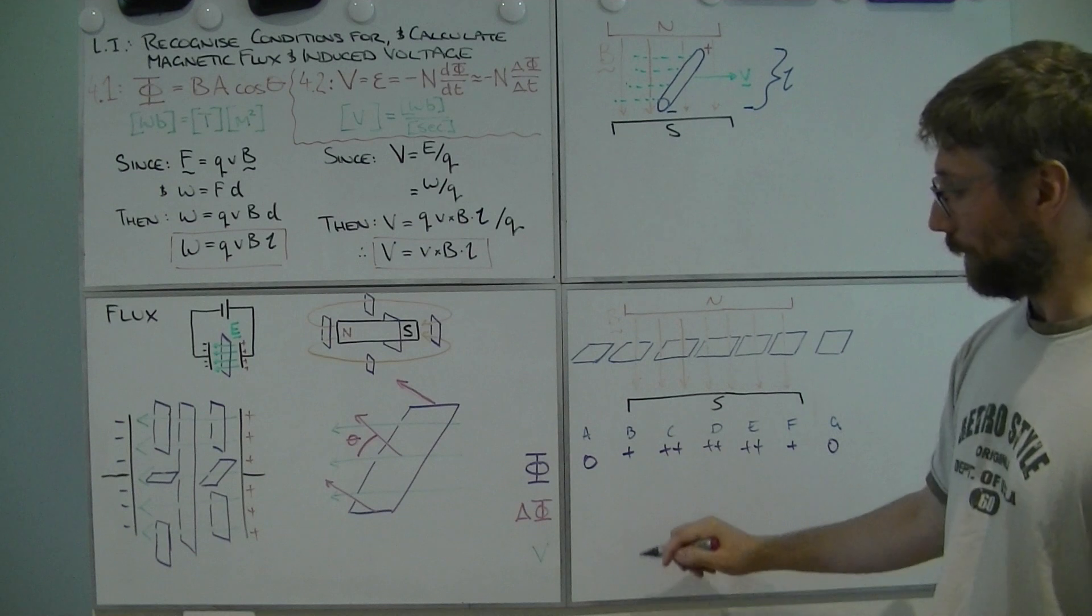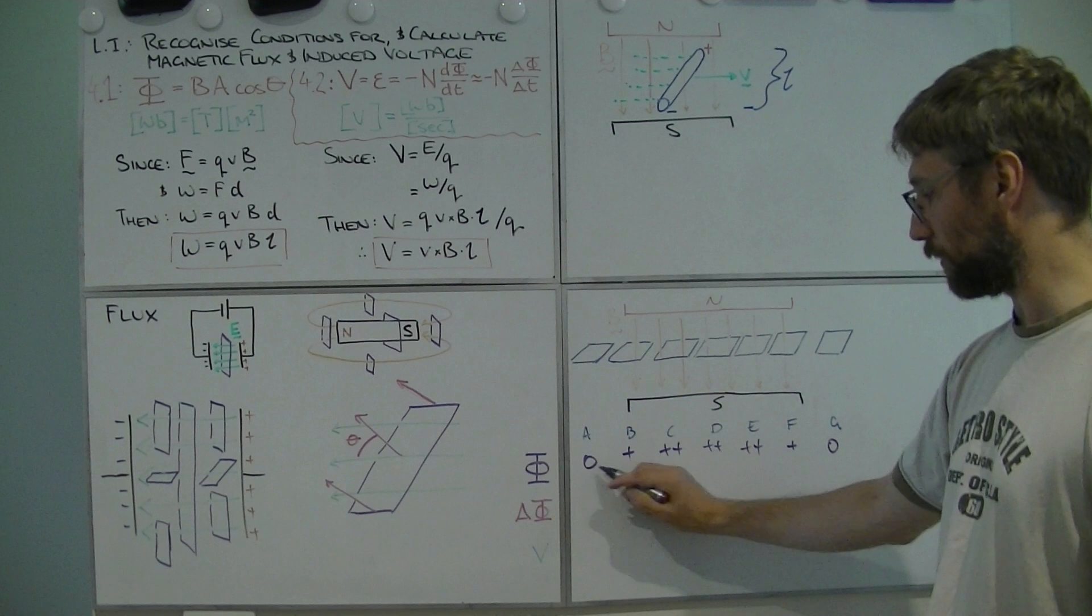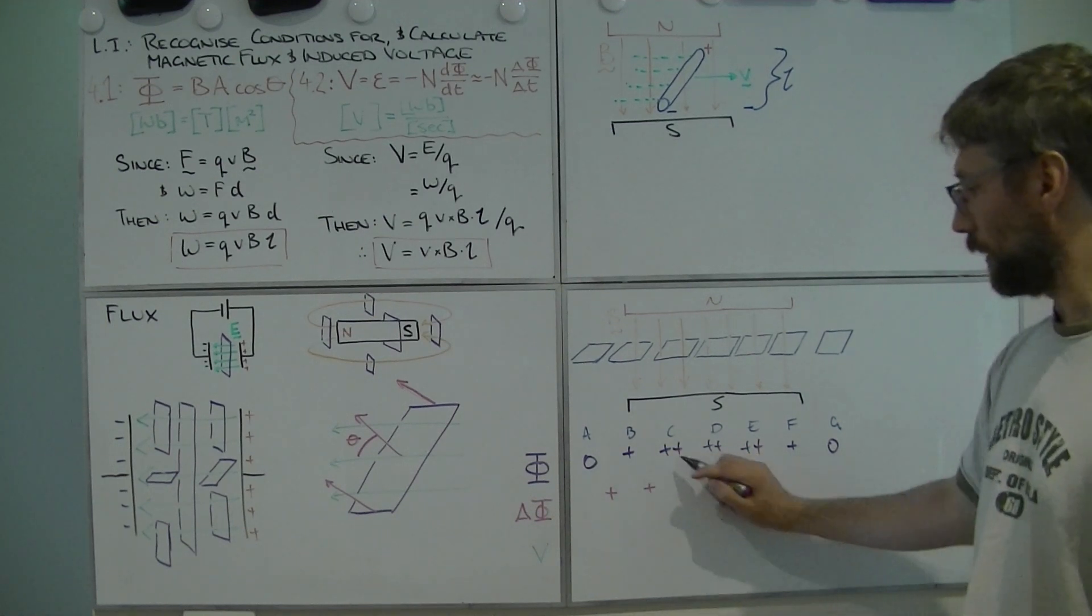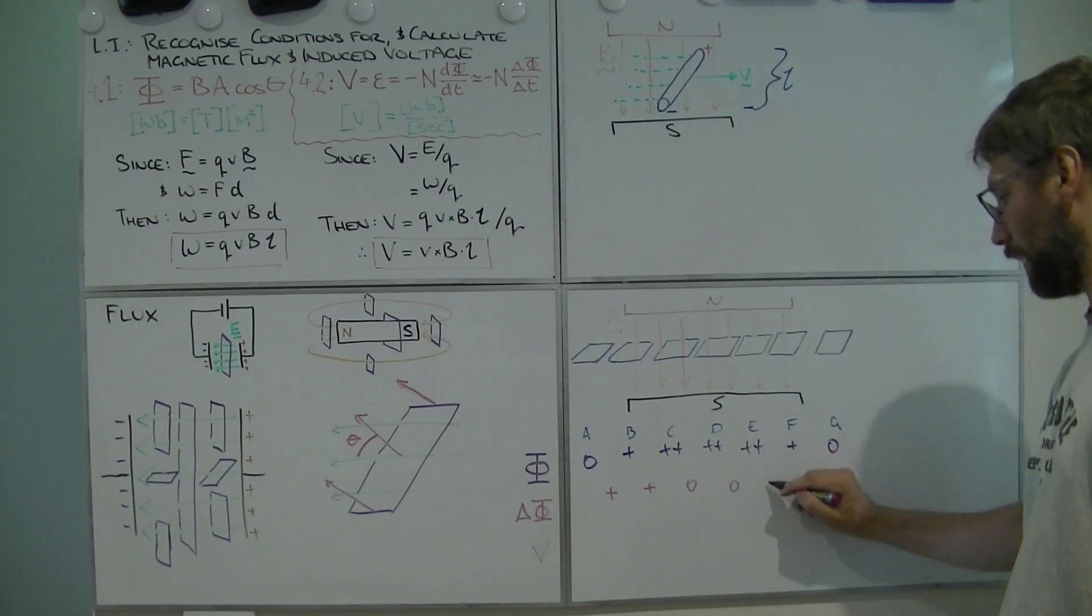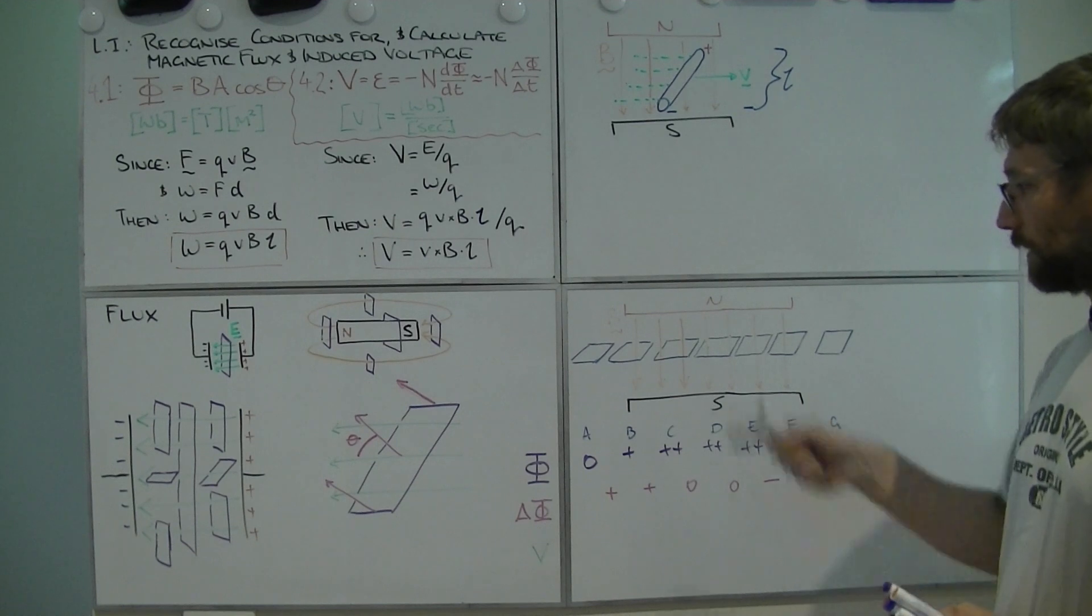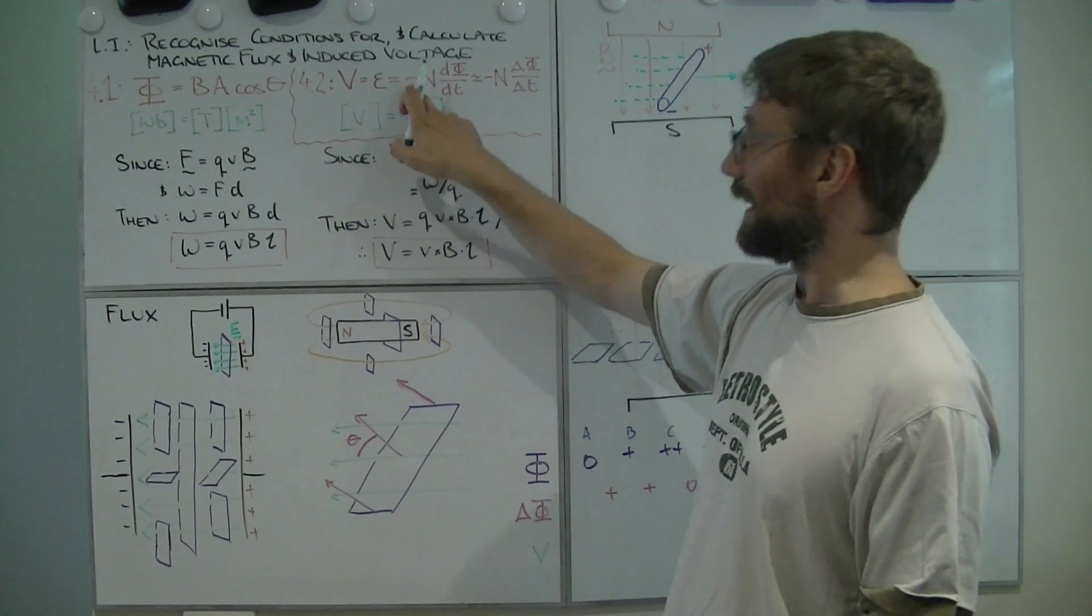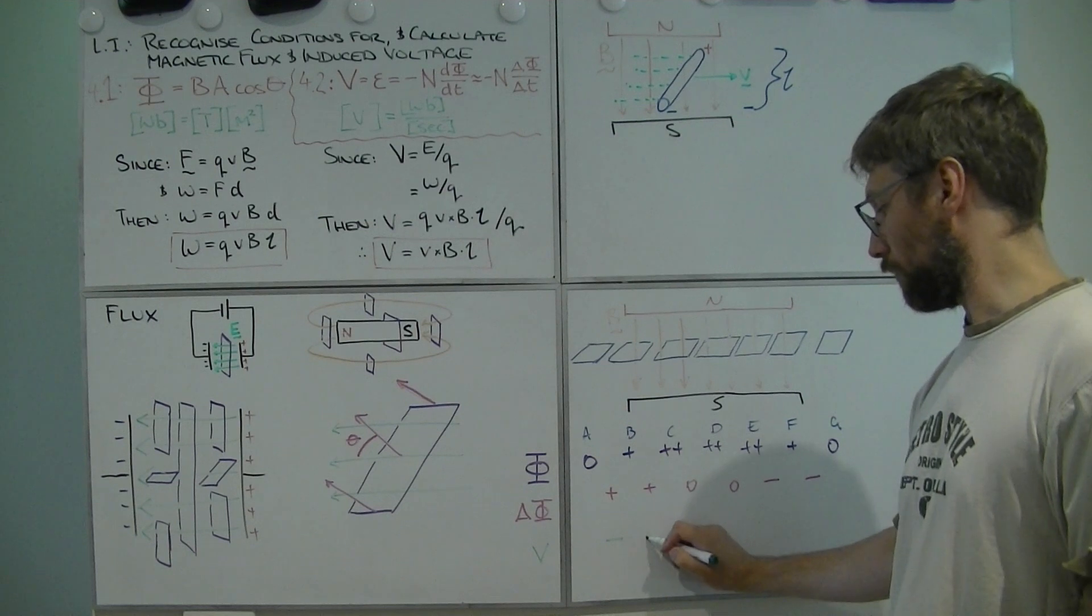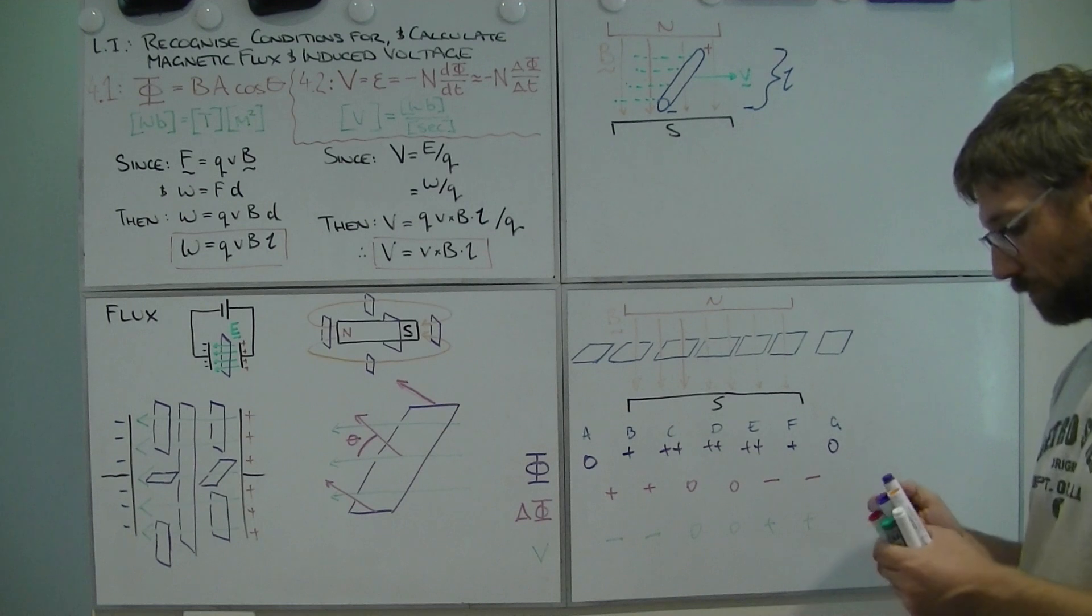Great. Alright. Change in phi. Okay. Well, that means I'm going to have to look at two neighbouring times. So, from zero to plus, that's gone up. From plus to double plus, that's gone up. From double plus to double plus, nothing happened. Same again. Here to here, I've gone minus. Here to here, I've gone minus. Cool. Alright. So, what does that mean for the voltage experienced in this loop? Okay. Remembering that our voltage is the negative of this. So, this would be a negative voltage, negative voltage, no voltage, no voltage, positive voltage, positive voltage, positive voltage.